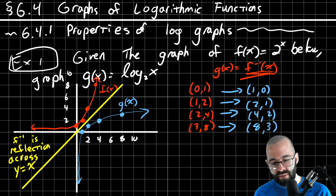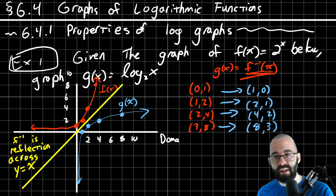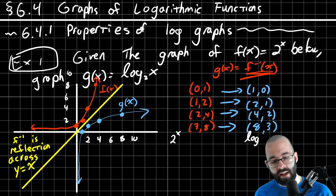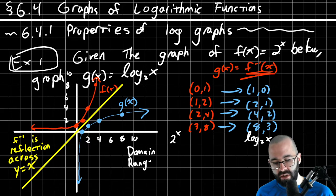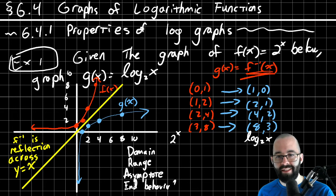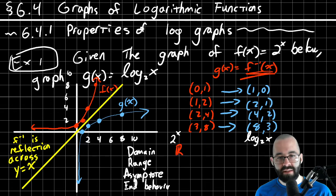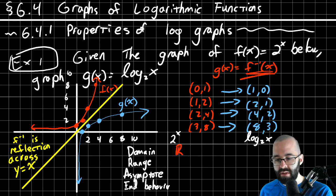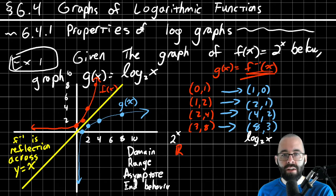Let's look at some properties for the exponential function and for the logarithmic function — 2^x and log base 2 of x, f and g. We'll look at the domain, the range, the equation of the asymptote, and end behavior. The domain of any exponential function is all real numbers — we said that in 6.2.